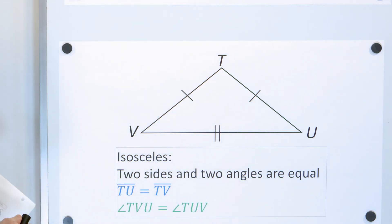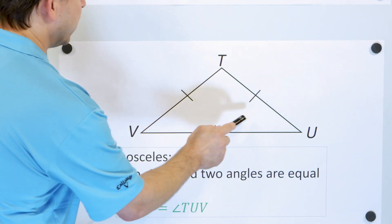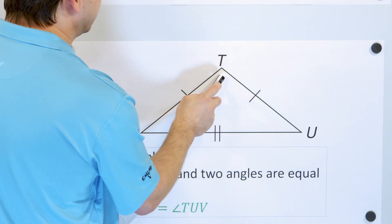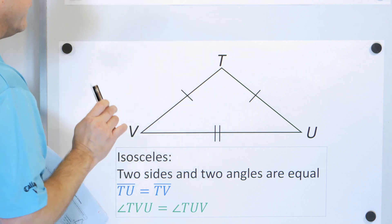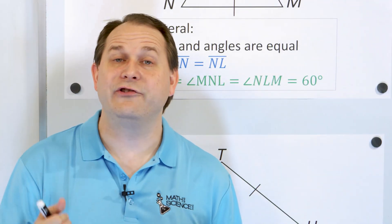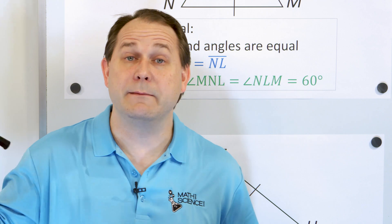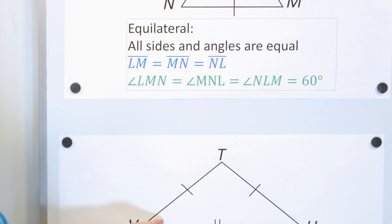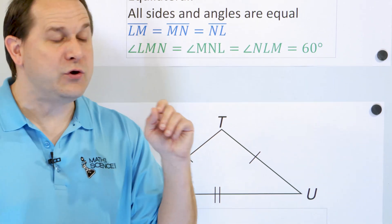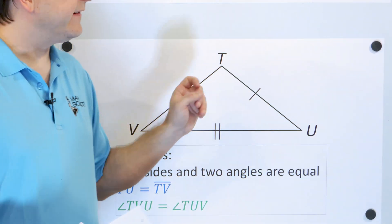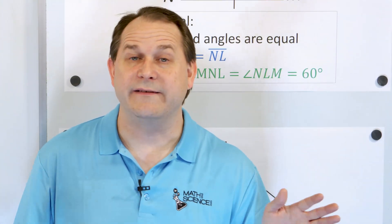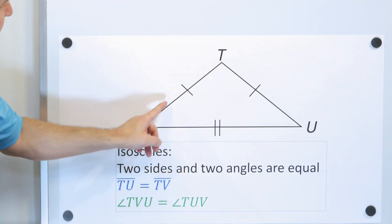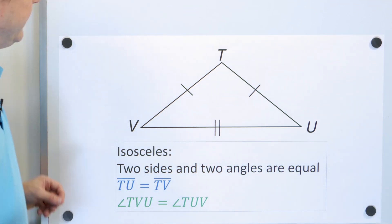Because two sides are equal, two angles inside of the triangle are also equal. This angle is going to be the same as this one, just because of symmetry — you can see they look about the same. This angle is much bigger, so it is different. No matter what these angles are, if you add them up, they will always equal 180 degrees.